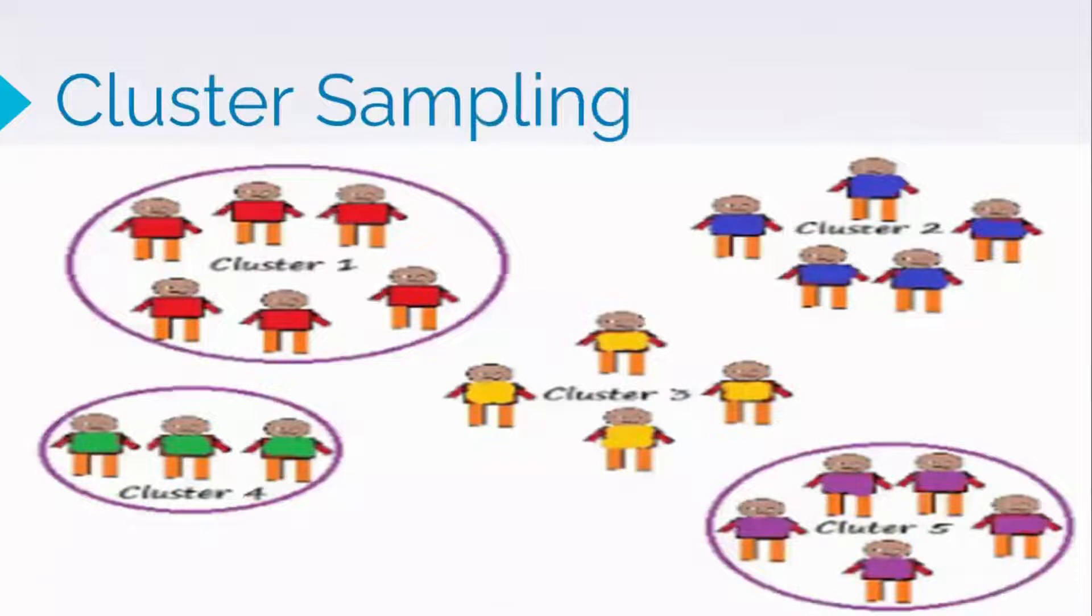Cluster sampling. Cluster sampling is one of the most economical ways of obtaining a sample for a survey. It consists of selecting clusters of units in a population and then obtaining a simple random sample of these clusters.